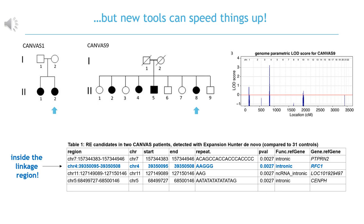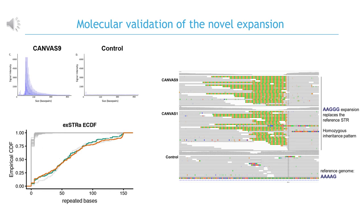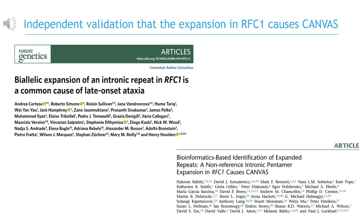Therefore, we analysed the entire genome with Expansion Hunter de novo and identified a single candidate within the linkage interval: a repeat expansion in intron 2 of the gene RFC1. After eight years of extremely slow progress, we identified a candidate mutation in six weeks — the time it took to generate and analyse the whole genome sequence data. We performed standard molecular validation, including repeat-prime PCR, and demonstrated that CANVAS was due to the replacement of an approximately 11-motif AAAAG sequence with hundreds of copies of a completely novel AAGGG motif. And as often occurs in discovery projects, two different teams reported the same outcome at essentially the same time, providing irrefutable genetic validation of the discovery.